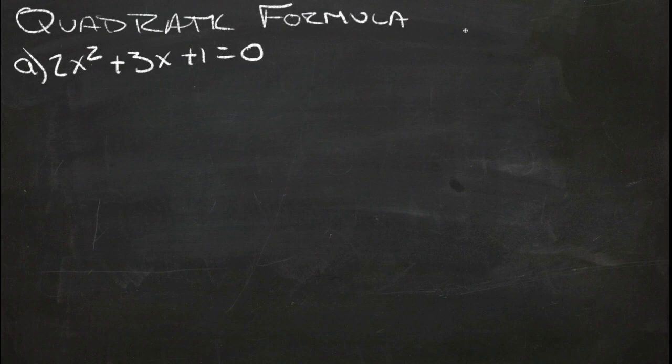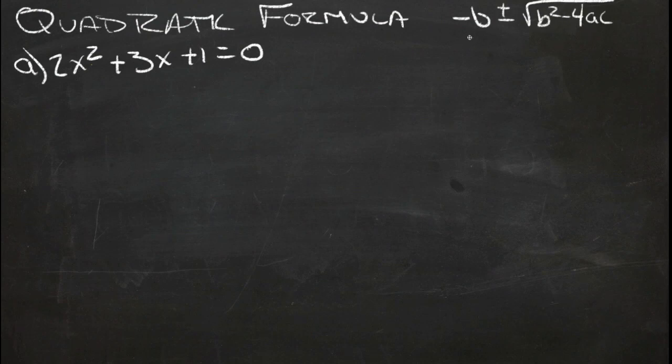We can plug it into the quadratic formula, which is negative b plus or minus the square root of b squared minus 4ac all over 2a, and solve that formula for what's commonly two answers, maybe one, maybe zero, but commonly two answers, and know what the two x-intercepts would be, what two numbers x can be that will make this equation true, will make this side equal to zero.